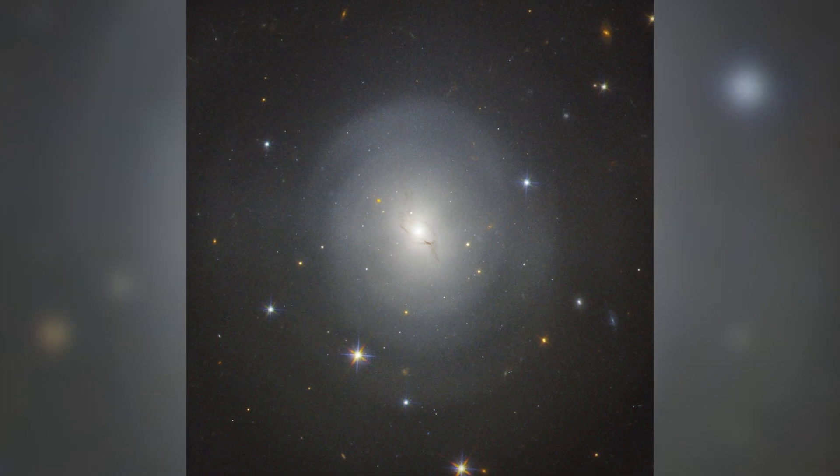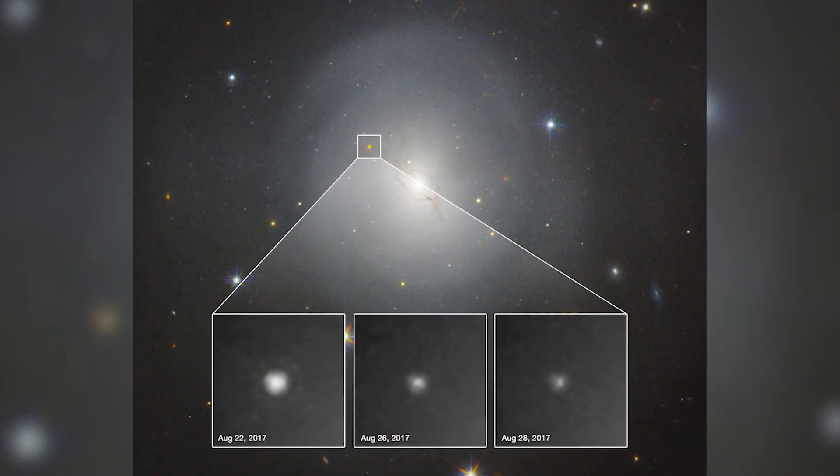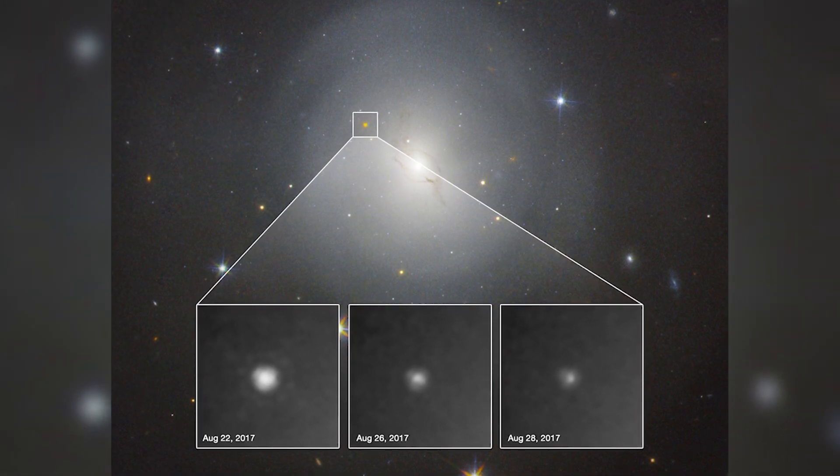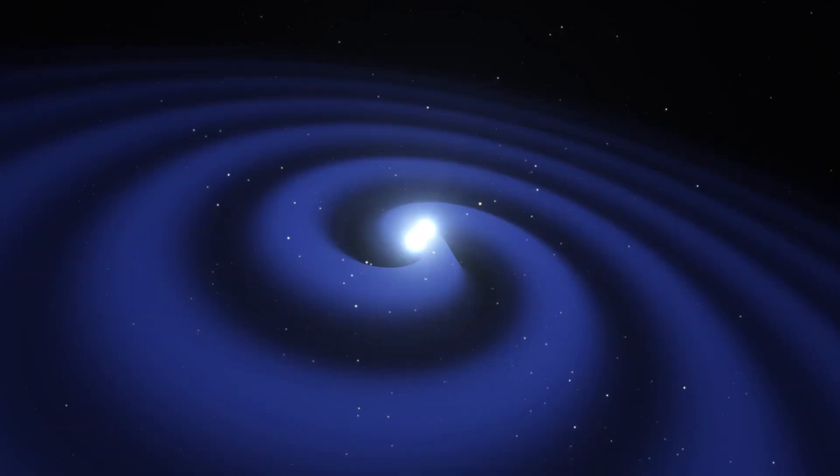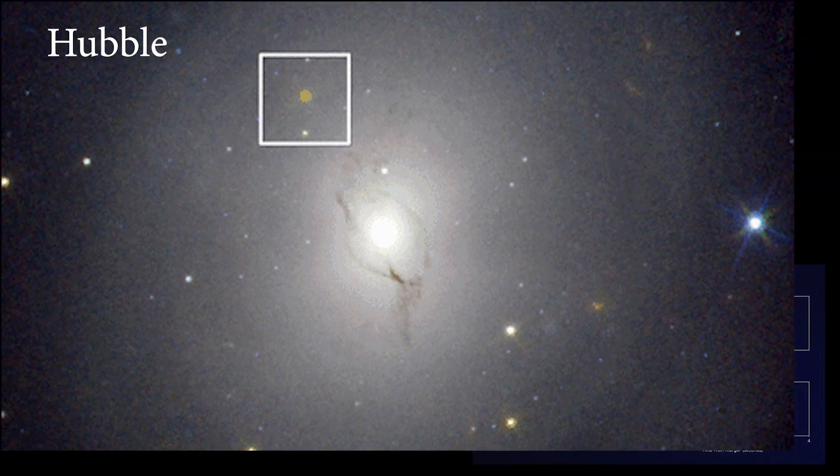The explosive event observed on August 17, 2017, was the first combined detection of gravitational waves and gamma radiation from the merger of binary neutron stars. This discovery prompted scientists to quickly aim Hubble at the site of the explosion.